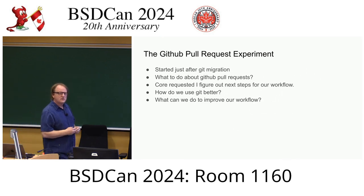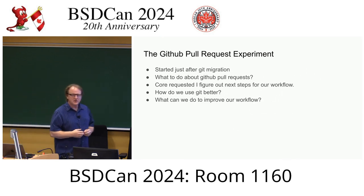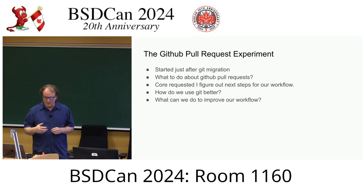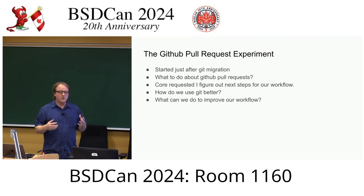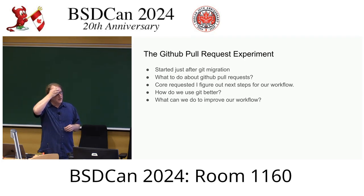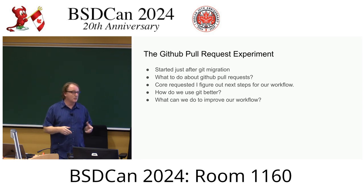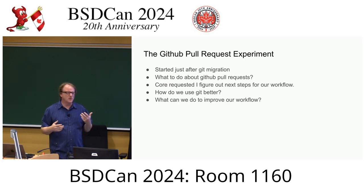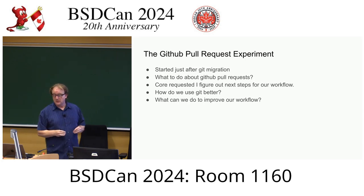I started these efforts just after we did the Git migration. There were a number of pull requests coming in to GitHub, and we handled them poorly at first. Nobody was looking at them. We didn't turn them off or anything. They just sat there and languished, and by the time we got to them, they were stale. It wasn't a good experience for anybody.